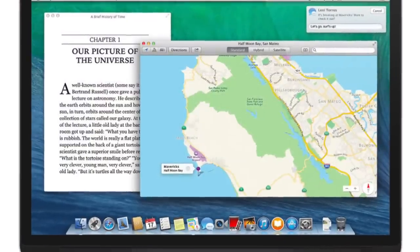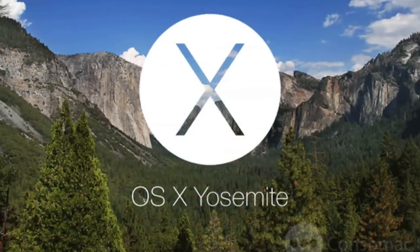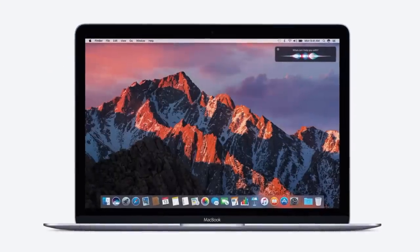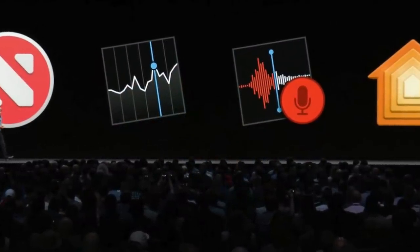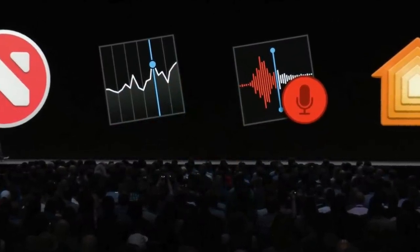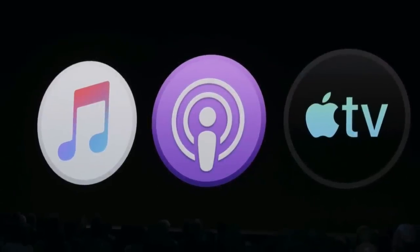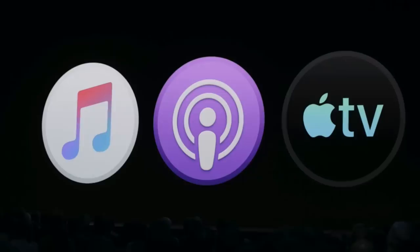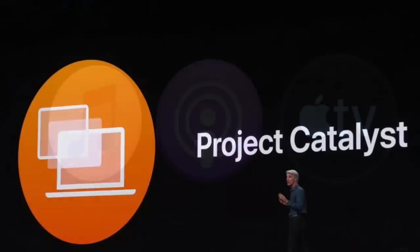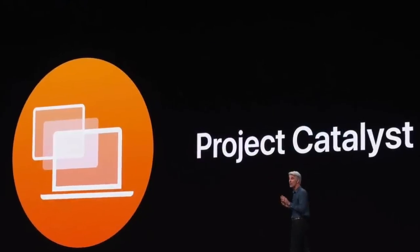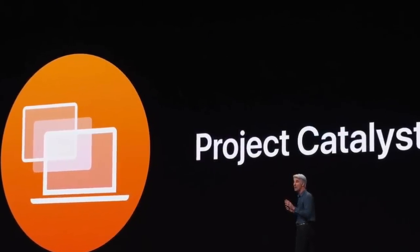Mavericks featured desktop versions of iBooks and Maps; Yosemite featured Photos; Sierra featured Siri and Apple Pay; Mojave featured News, Stocks, Voice Memos, and Home; and Catalina features dedicated Music and Podcasts apps, plus an Apple TV app — all of which were borrowed from iOS. Not to mention Apple's Project Catalyst, which is designed to help developers bring iOS and iPadOS apps to the Mac.